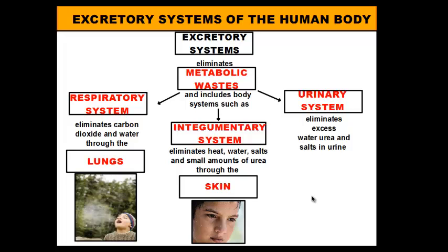Lastly, we have the urinary system. This is the system that produces and eliminates water, urea, and salts in urine — so this is the system that produces urine. Let's take a look at what the urinary system looks like, because that's what we're going to mainly focus on tonight.